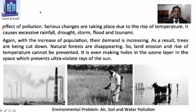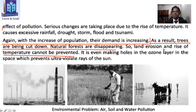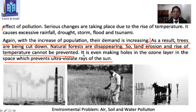With the increase of population, their demand is increasing, so more population needs more things. As a result, trees are being cut down, which is bad for nature. Natural forests are disappearing, so land erosion and rise of temperature cannot be prevented. It is even making holes in the ozone layer in space, which prevents ultraviolet rays of the sun. You know about the ozone layer from your science book, so you must read this part carefully.